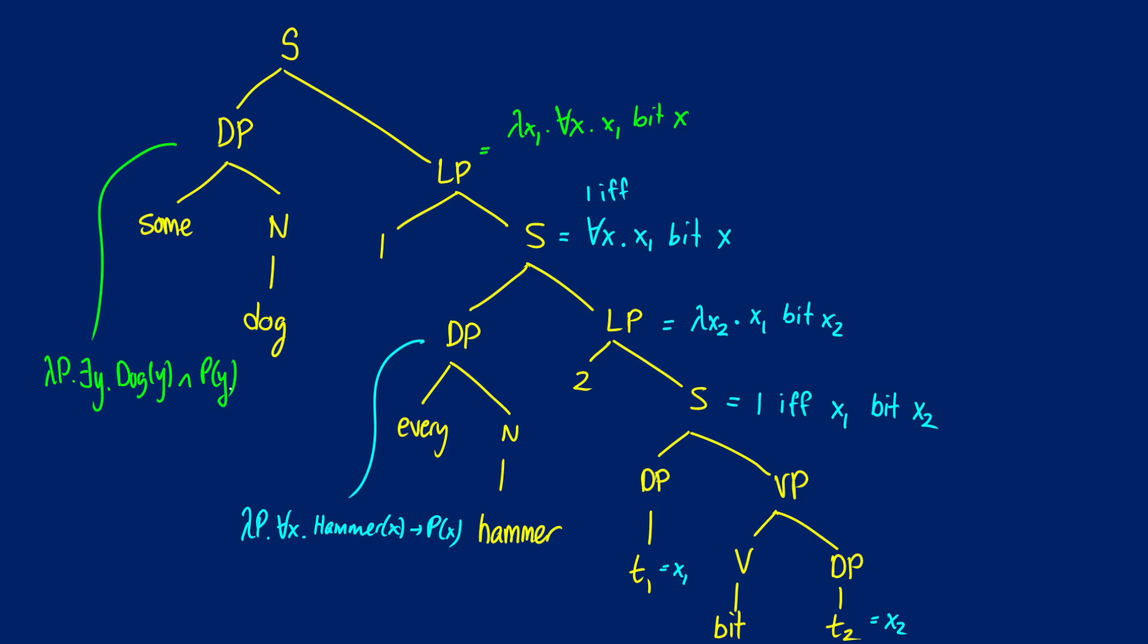When we plug in our DP and our LP together at our top node, we're finally going to get one if and only if we have exists a Y out front. So if there exists a Y, that Y is a dog, and...